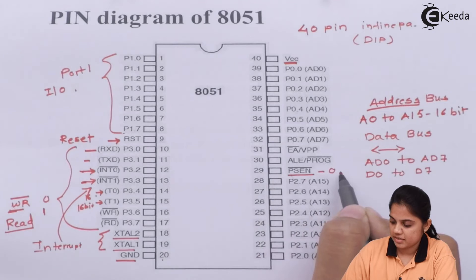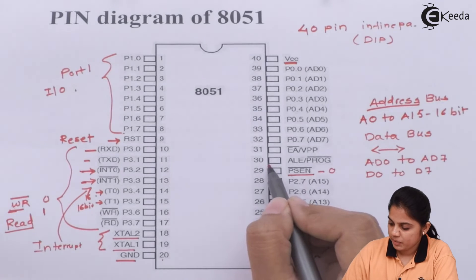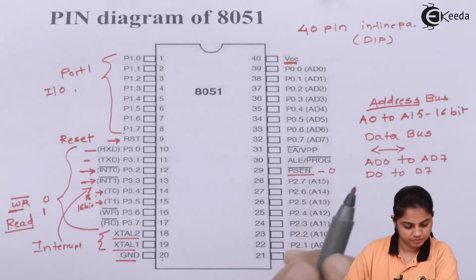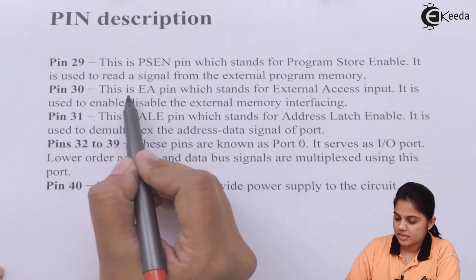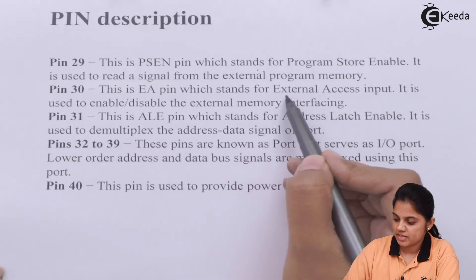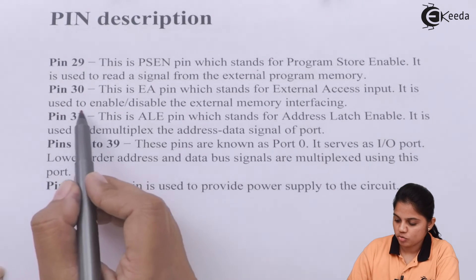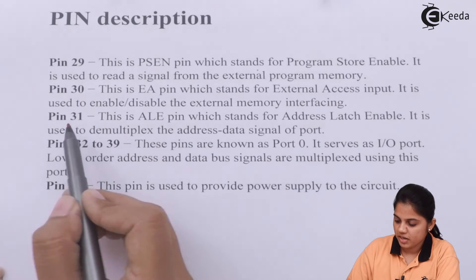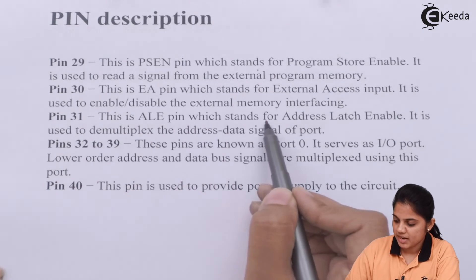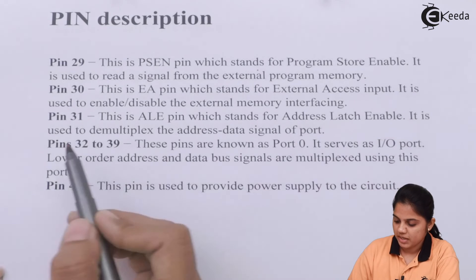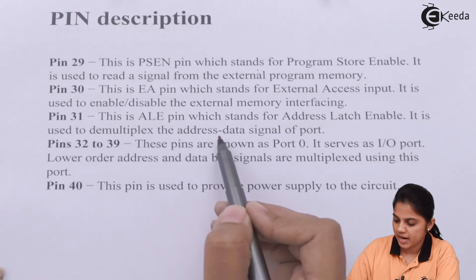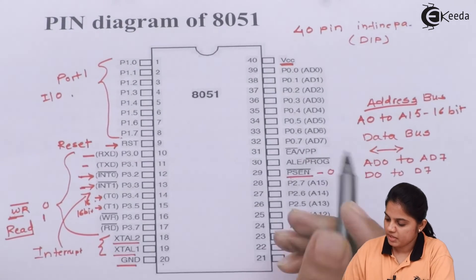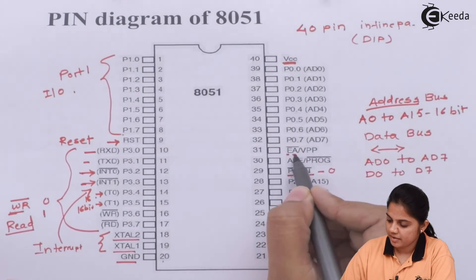Pin number 30 is the EA-bar pin, which stands for External Access input. It is used to enable or disable external memory interfacing. Pin number 31 is the ALE pin, which stands for Address Latch Enable. It is used to demultiplex the address and data signals of the port. So EA controls external addressing mode, ALE is the latch enable, and pin 29 is the program store enable mode.